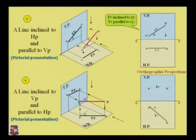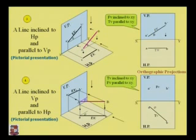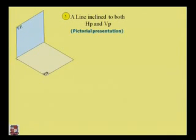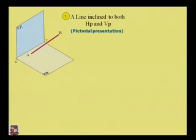Now when the point A and B is rotated in the horizontal plane, the line AB situated at any angle φ will be below the XY line. In case number 5, the line is inclined to both the horizontal plane and vertical plane, making angles of inclination with both the horizontal plane and vertical plane, as we can see in the figure.